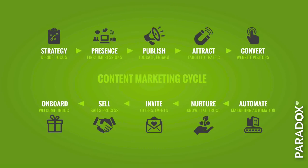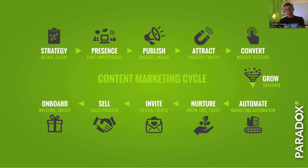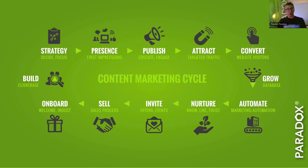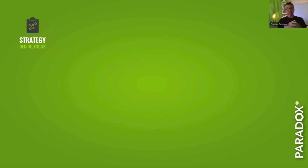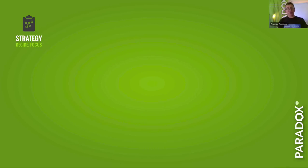Here's the model of the content marketing cycle. You can see five steps across the top: strategy, presence, publish, attract, convert. The purpose of those five steps is to grow your marketing database. The bottom five — automate, nurture, invite, sell, and onboard — result in you building a client base of your ideal clients. Every single one of these steps is an area of marketing you can learn, master, and in nine out of ten cases, measure. When I presented this at a keynote in Fiji, someone said it demystified marketing for them — and my hope is you'll feel exactly the same.